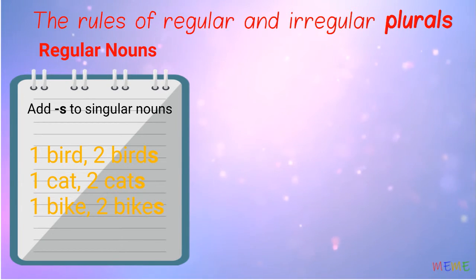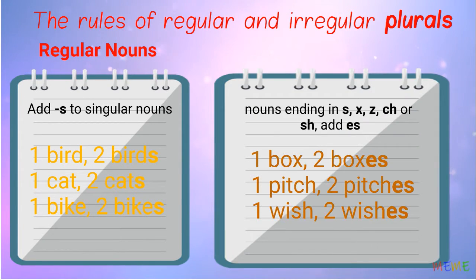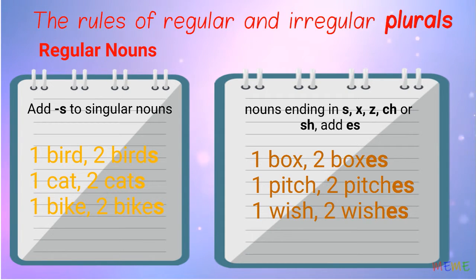For nouns ending in -s, -x, -z, -ch, or -sh, add -es. Box, boxes. Pitch, pitches. Wish, wishes.